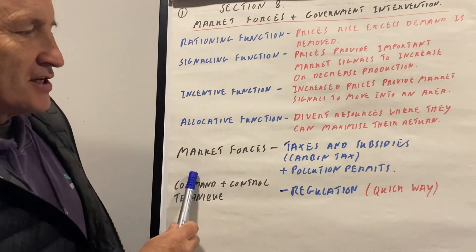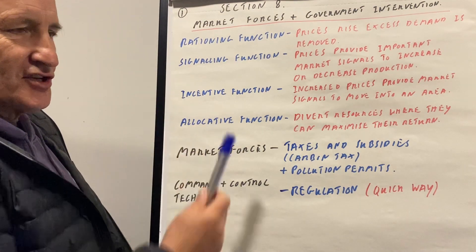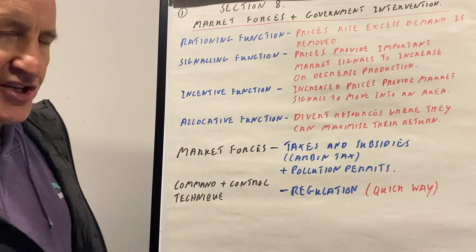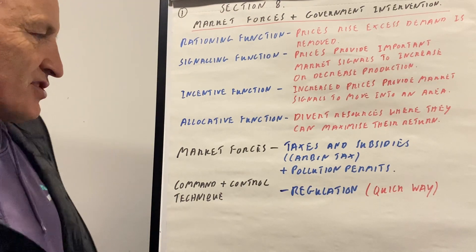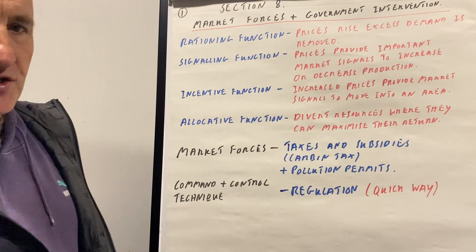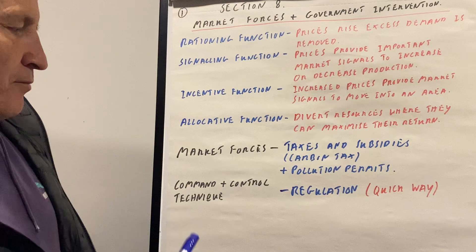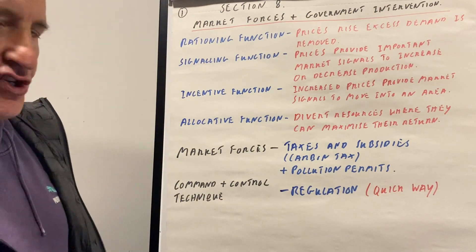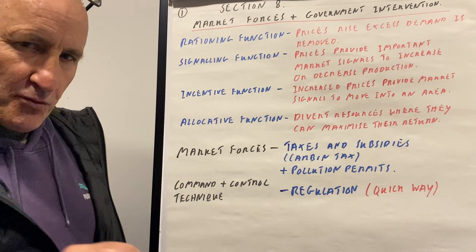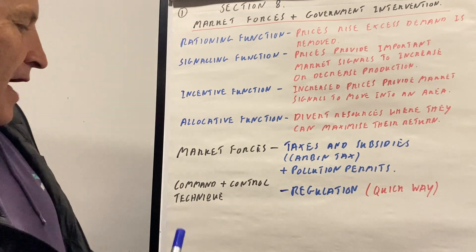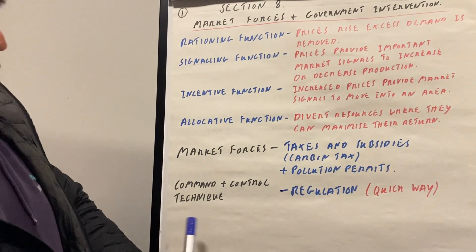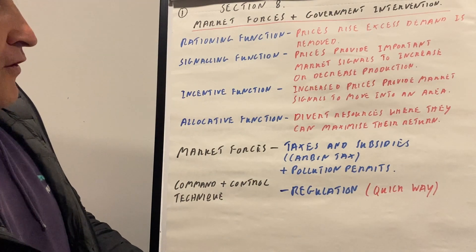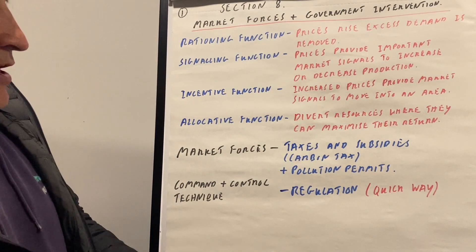Market forces work in this way, but we can also use taxes and subsidies, negative consumption externality diagrams, carbon taxes, and pollution permits to push firms into the right sort of direction. That is the question of the government changing the pattern of demand. We can also have a command and control technique, which is regulation, which is a quick way of doing something.